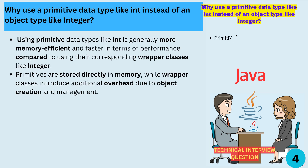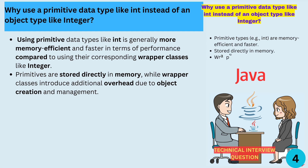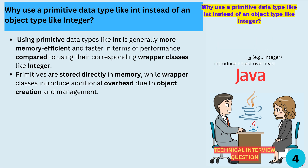Why use a primitive data type, like int, instead of an object type, like Integer? Using primitive data types like int is generally more memory efficient and faster in terms of performance compared to using their corresponding wrapper classes like Integer. Primitives are stored directly in memory, while wrapper classes introduce additional overhead due to object creation and management.